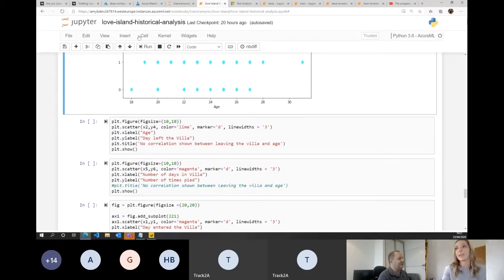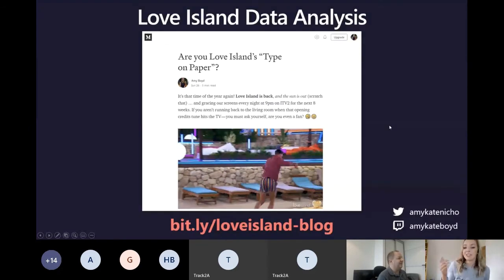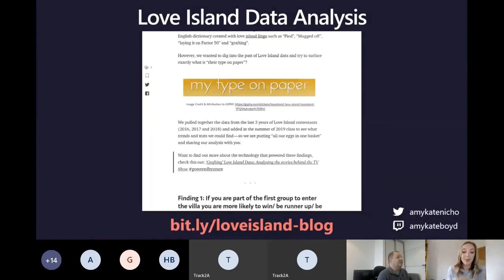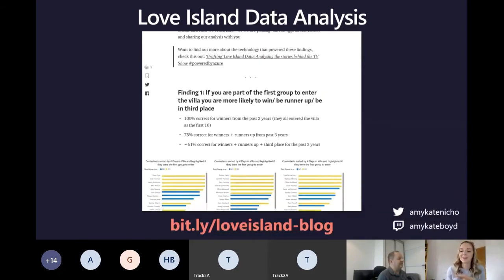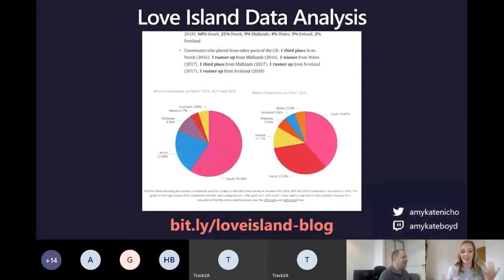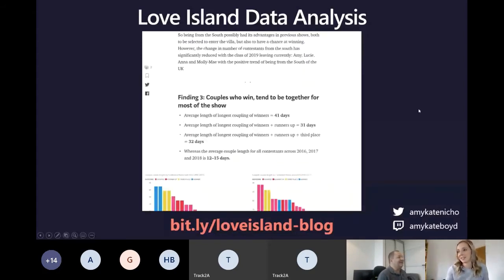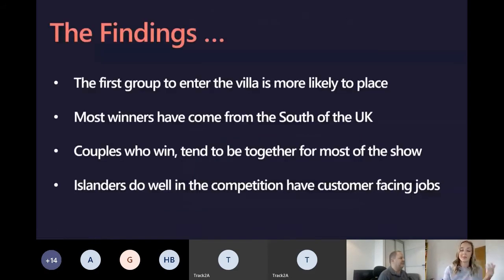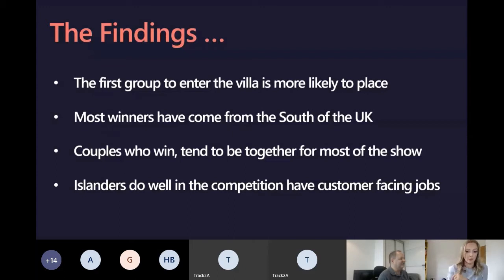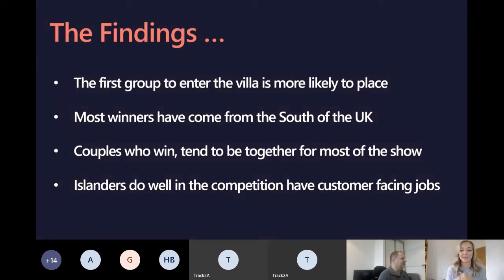All of this information is on GitHub — I'll share a link if you wanted to dive in. And if you want to check out the blog post, do take a good read. So those are the four findings: the first group to enter the villa is more likely to win; most winners have come from the south of the UK; couples who win tend to be together for most of the show; and Islanders do well who have customer-facing jobs. I made a bit of a tongue-in-cheek saying: if you're applying for Love Island, check out these four criteria because these are the people who seem to be the most successful.